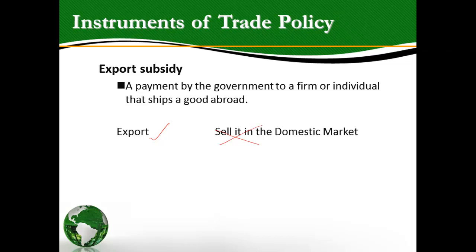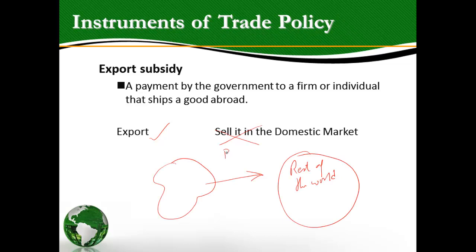So what happens as a result of an export subsidy? If the price of the product was $10 — the world price, $10 in the rest of the world as well as in the domestic country, assuming free trade — as soon as the export subsidy is given, the exporter who decides to export the good gets a subsidy, let's say $2. So when the producer exports the good, he gets a price of $12, but if he decides to sell in the domestic market, he only gets $10. That's the distinction between an export subsidy and a production subsidy: the export subsidy is only given if the product is exported to the international market.